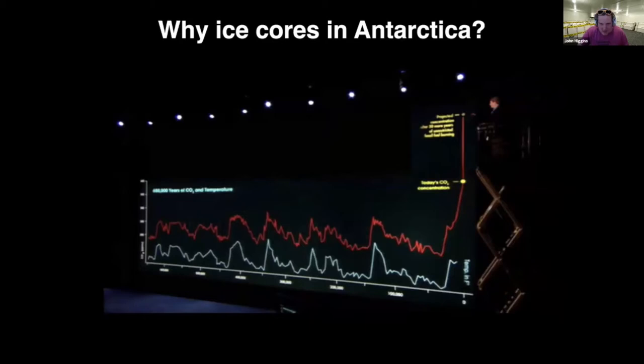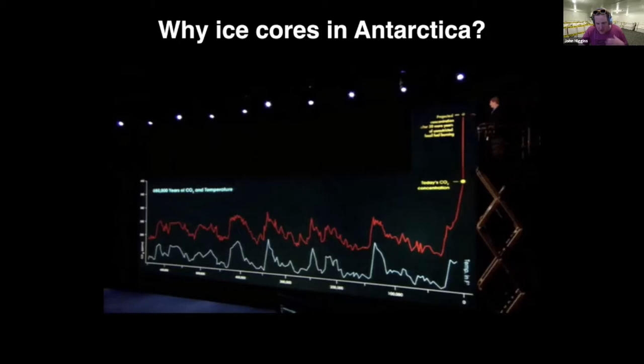The reason we think greenhouse gases have a very important role stems from Al Gore's Inconvenient Truth, where one of the climaxes of the movie is when he gets on a people mover and shows how high the red curve goes. The red curve is the amount of carbon dioxide in the atmosphere, and the blue curve is a temperature record from Antarctica — showing the Earth going into and out of these big ice ages. The last ice age is shown as this low point in either CO2 or temperature.